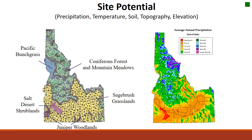Site potential drives what kind of plant communities or functions we see on rangelands. When we talk about site potential, we're referring to precipitation — how much does this plant community receive? What is the temperature? Do we have a freeze-thaw cycle that might influence soils? Soils become really important: do we have rocky soils, how much water-holding capacity do they have? Topography, elevation, and aspect all play a role in a site's potential.